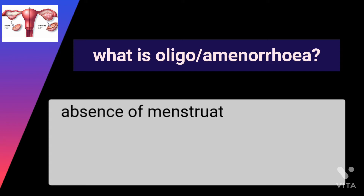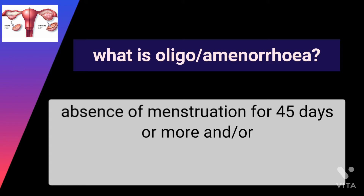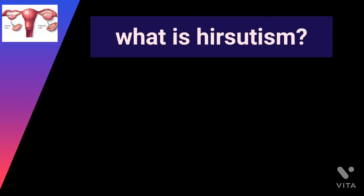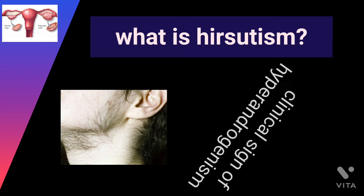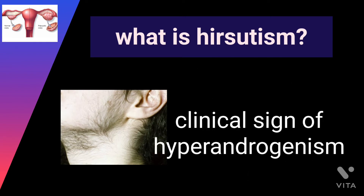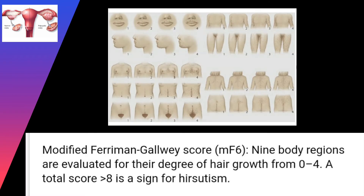According to the definition given by the Rotterdam consensus, oligo or amenorrhea is absence of menstruation for 45 days or more, or less than 8 menses per year. Hirsutism is unwanted male-pattern hair growth on a woman's face, chest, and back. Hirsutism can result from excess male hormone called androgen, so it is a clinical sign of hyperandrogenism.